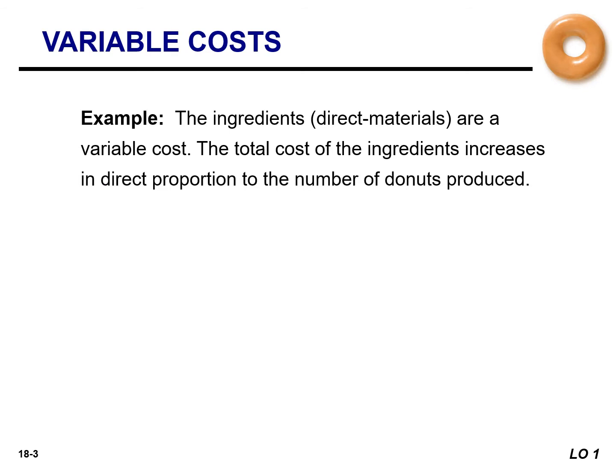The best way to illustrate variable cost is with donuts — everyone can relate to a dozen donuts. Think of the raw materials: the flour, the sugar, the eggs, the milk. All the ingredients that go into making the donuts are a variable cost. The more donuts we make, the higher the cost of our raw materials or direct materials.